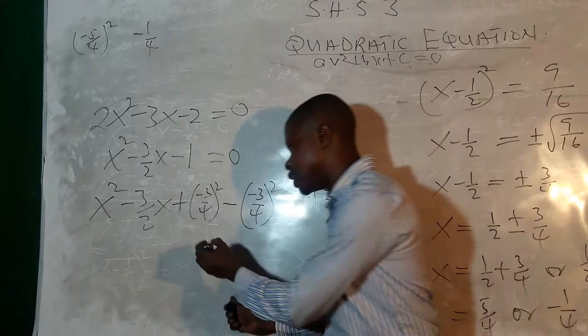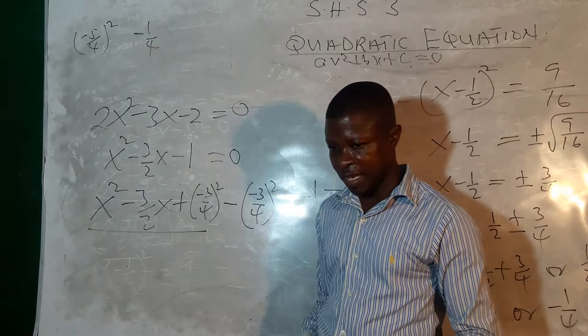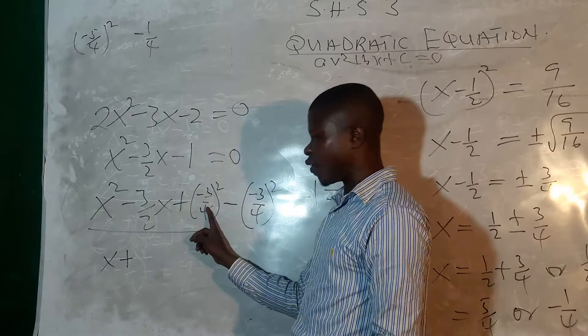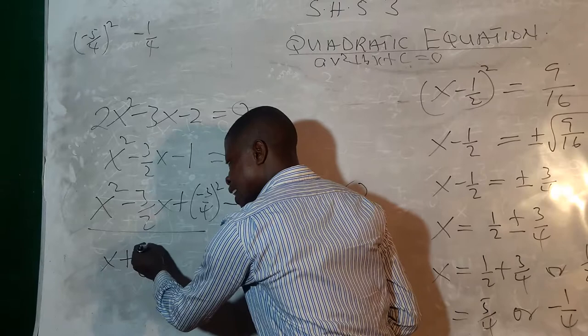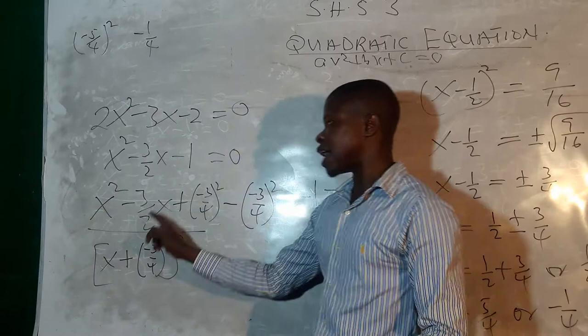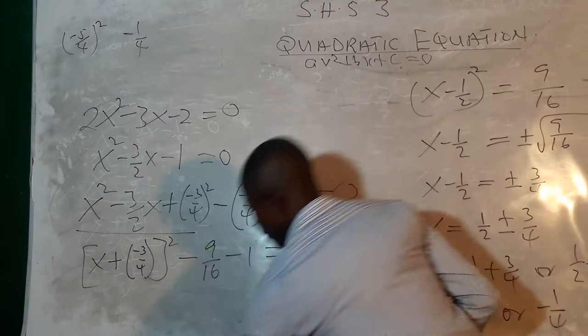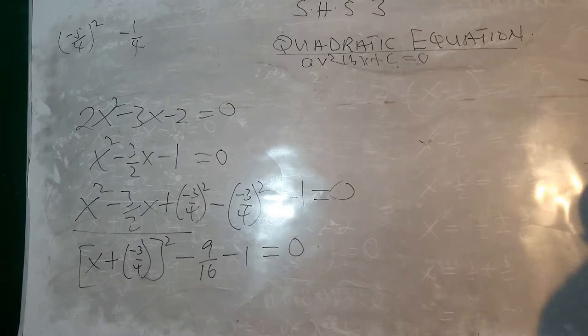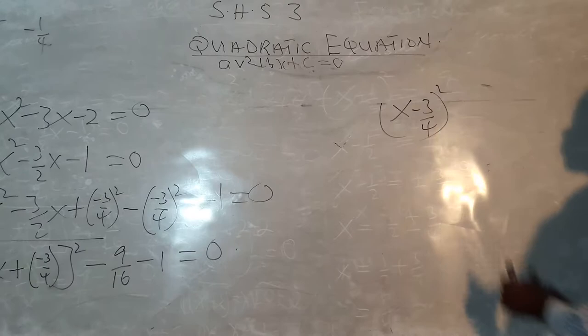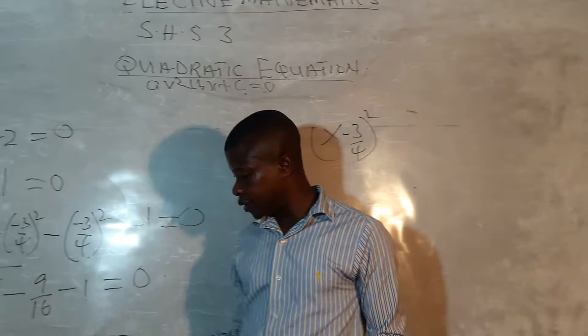Now that our new c is the square of half the coefficient of x, this quadratic expression is a perfect square. We write it as x minus 3 over 4, all squared. Then we simplify the remaining constant terms: 9 over 16 minus 1. Writing negative 1 as negative 16 over 16, we get 9 over 16 minus 16 over 16, which gives us negative 25 over 16.